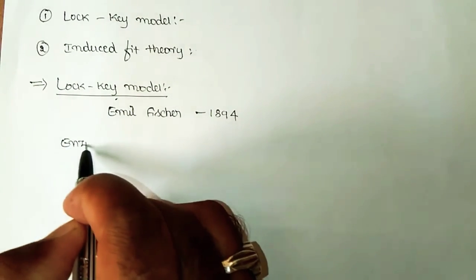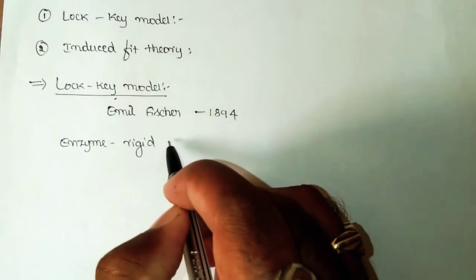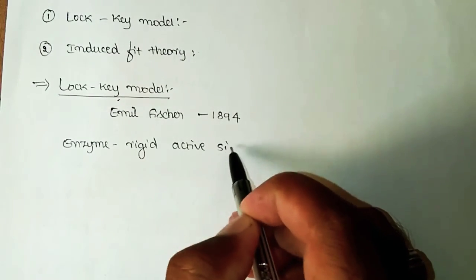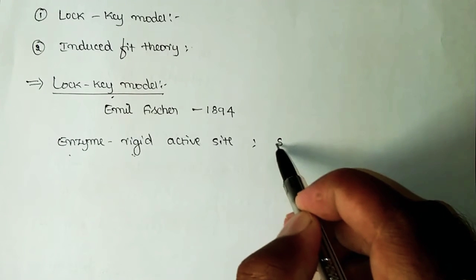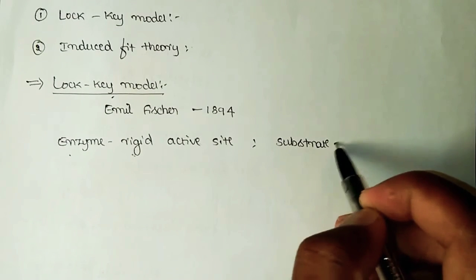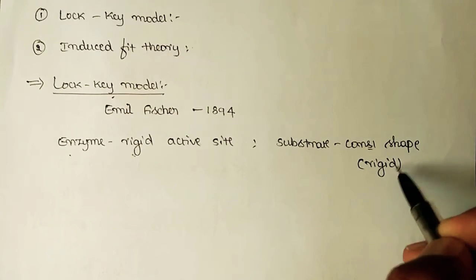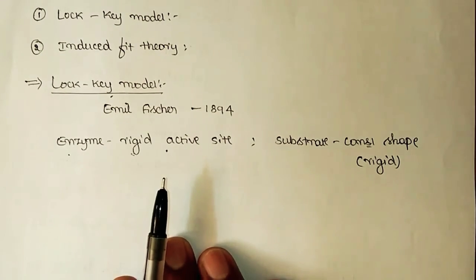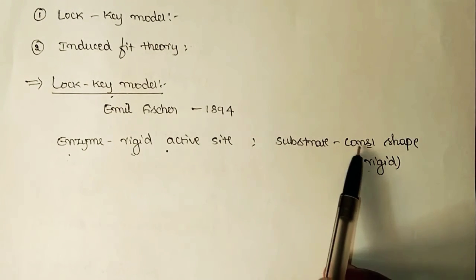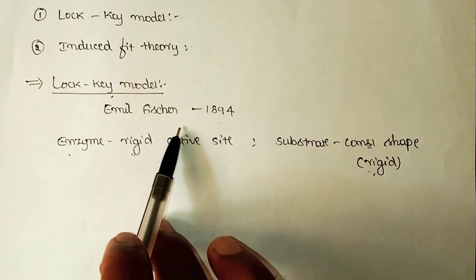According to the lock and key model proposed by Emil Fischer, enzymes have active sites, and the active site will be rigid — meaning the conformation of the enzyme is rigid with no changes at all. Similarly, the conformation of the substrate molecule is also fixed; it is also having a constant shape, meaning it is also rigid. So according to the lock and key model, both the active site of the enzyme and the substrate structure will be rigid.